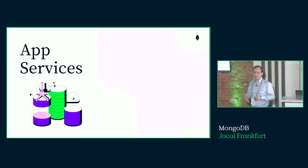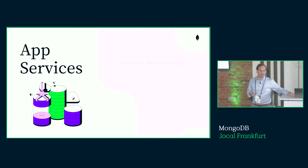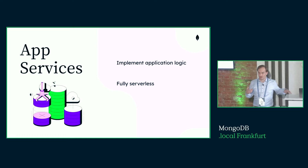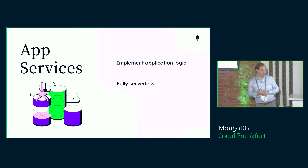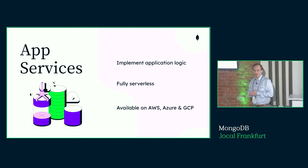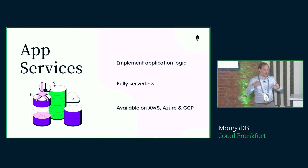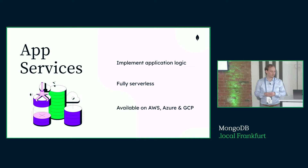In MongoDB Atlas we have something called App Services, which allow us to implement application logic on a completely serverless infrastructure hosted by MongoDB — on all three cloud providers: AWS, Azure, and GCP. This is an additional layer we provide for you to add more features and capabilities to your whole deployment on Atlas.